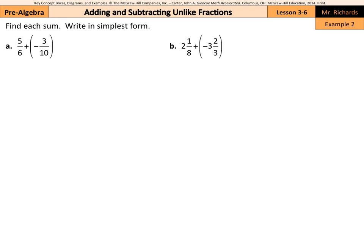Now, in example 2a and b, find each sum, write in simplest form. We'll have our 5 sixths plus our negative 3 tenths. Now, for this, I'm going to attach the negatives to the numerators.